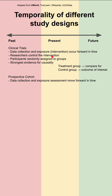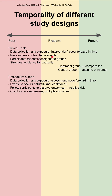The next study design is a prospective cohort. In these studies, data collection and exposure assessment also move forward in time, and the exposure occurs naturally — it is not controlled. You follow participants to observe outcomes, and you obtain a relative risk in the end. This design is good for rare exposures and multiple outcomes.